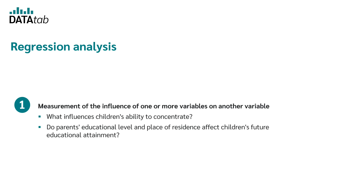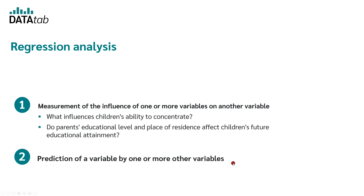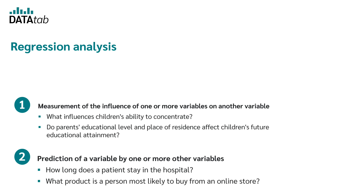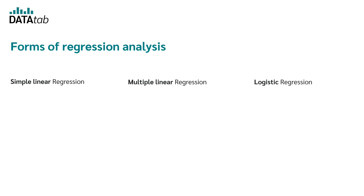The second area — using regression for predictions — is more application-oriented. For example, in order to optimize hospital occupancy, you might want to predict how long a patient will stay in the hospital based on characteristics such as age, reason for stay, and pre-existing conditions. Another example: as an operator of an online store, you may want to predict which product a person is most likely to buy and suggest it to increase sales. This is where regression comes into play.